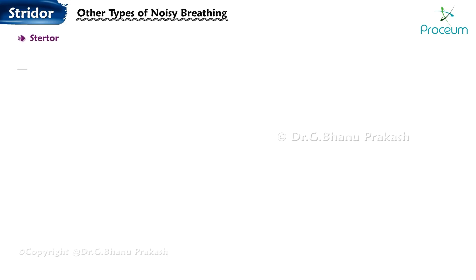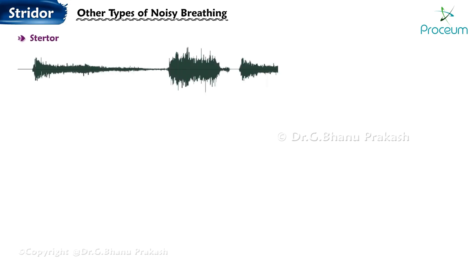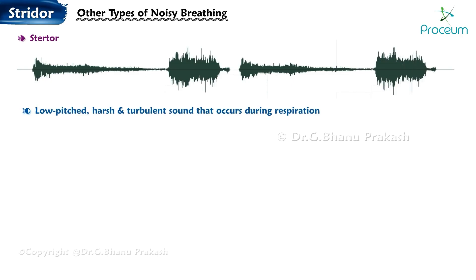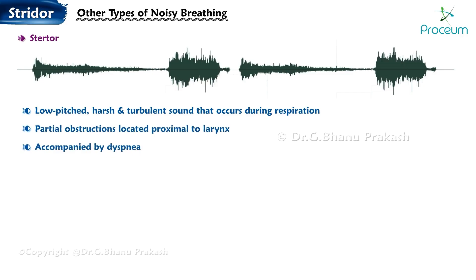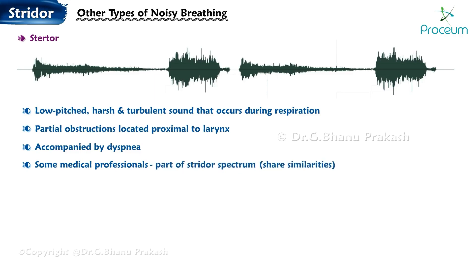Other Types of Noisy Breathing. Sturter is characterized by a low-pitched, harsh, and turbulent sound that occurs during respiration. It is typically caused by partial obstructions located proximal to the larynx and may be accompanied by dyspnea. Some medical professionals consider Sturter as part of the Strider spectrum, as they share similarities.